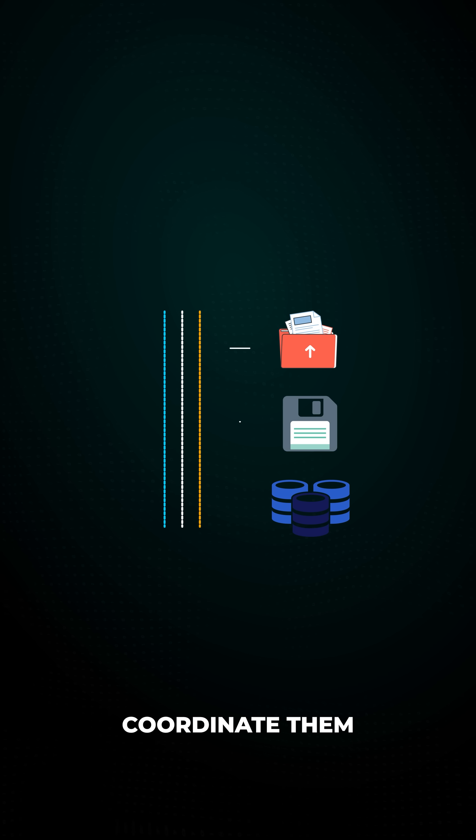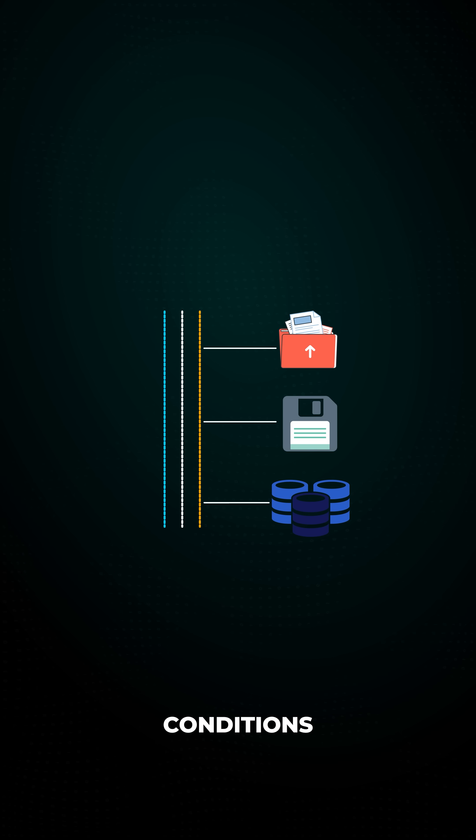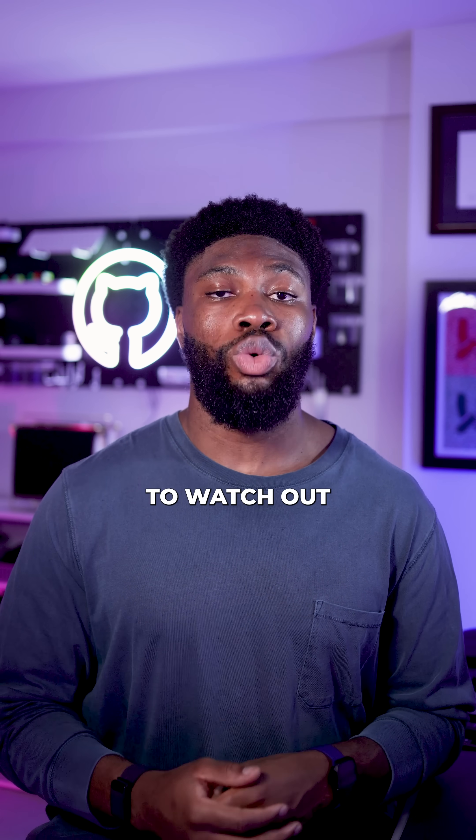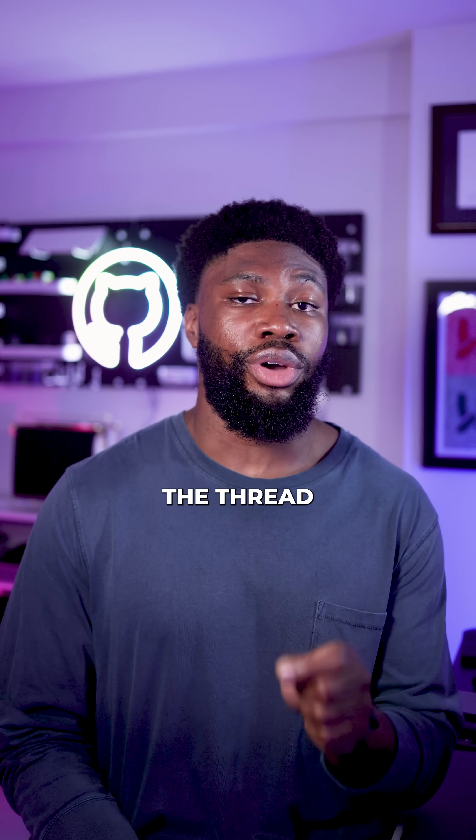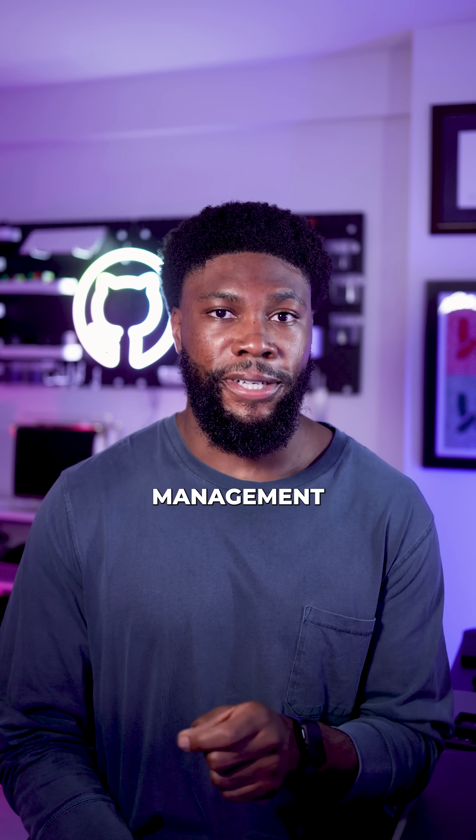Second, threads can share resources — files, memory, and databases — which means you need to coordinate them carefully to prevent race conditions. Another thing to watch out for is thread lifecycle management.